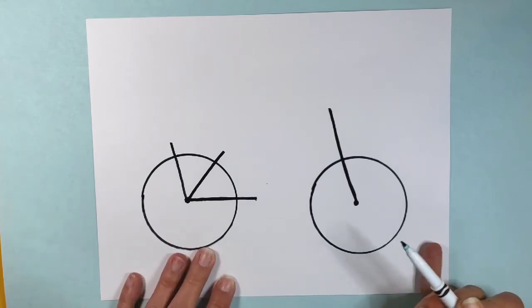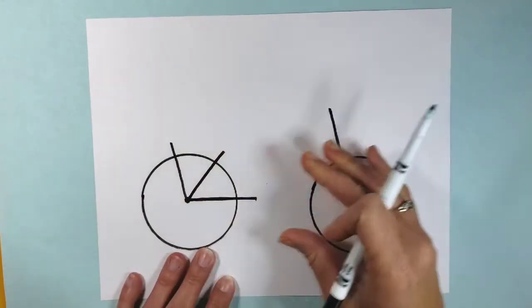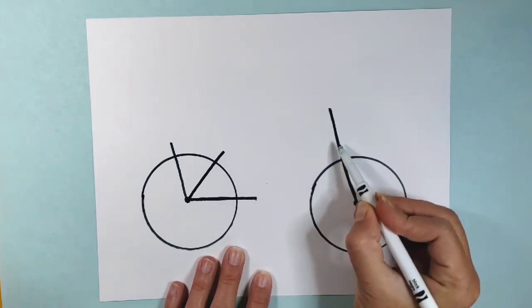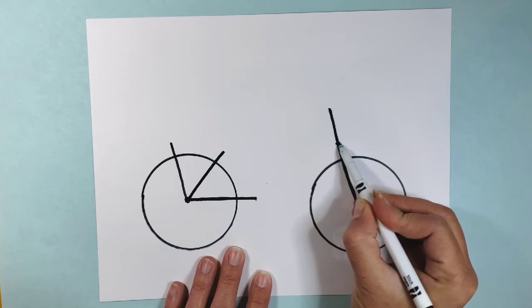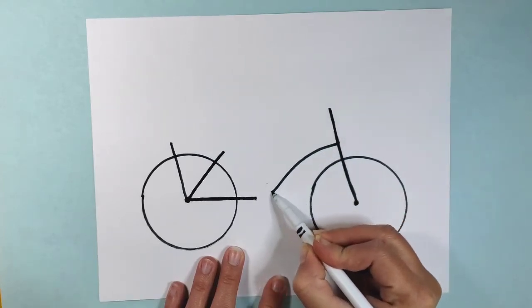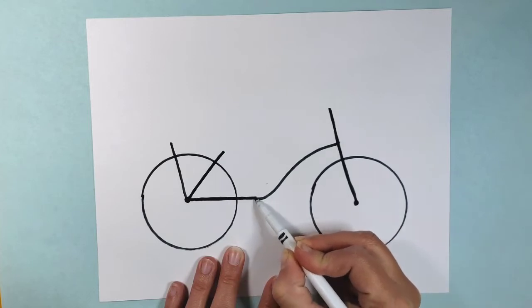Now to connect the front and the back of the bike. So this line that I just made needs to connect to my front part of my bike. And I'm going to do that by making kind of a curved line that goes down and around and connects there.